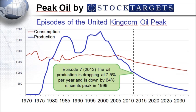Episode number seven: the oil production is dropping at a pace of 7.5% per year, and the total decrease has now reached 64% from its peak.